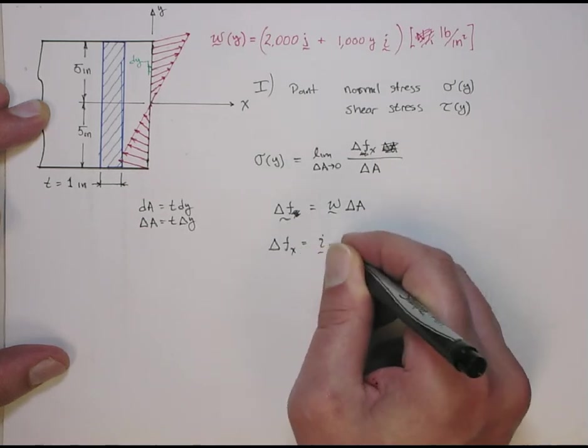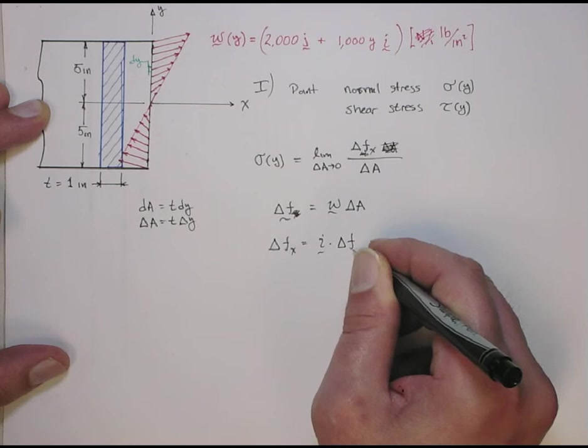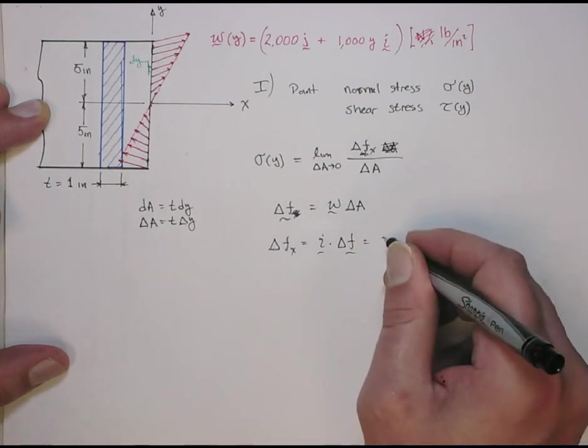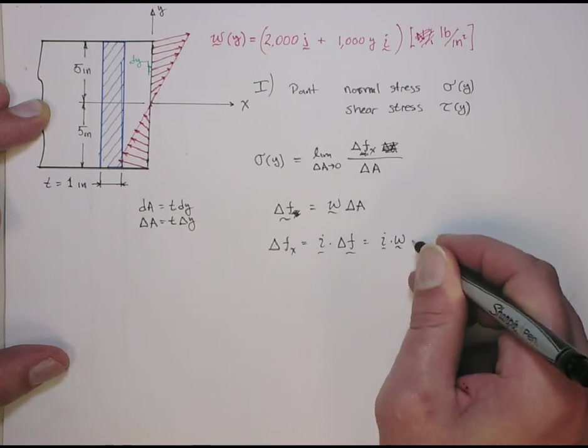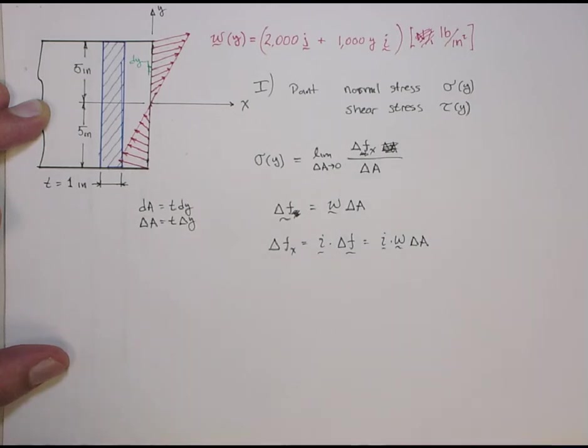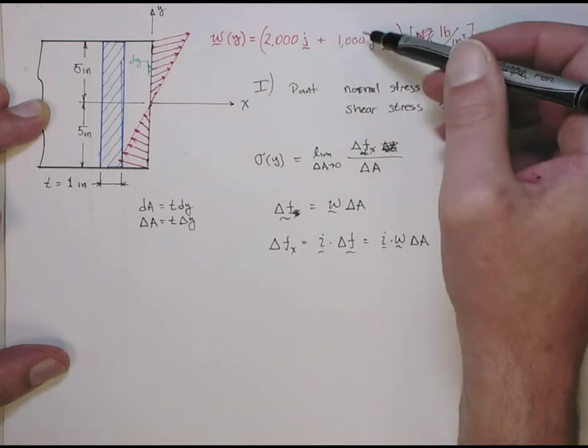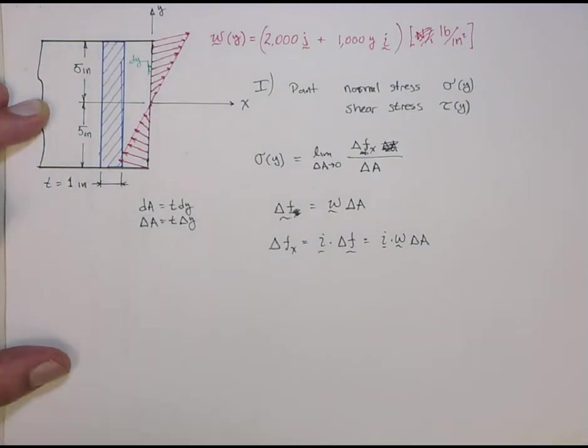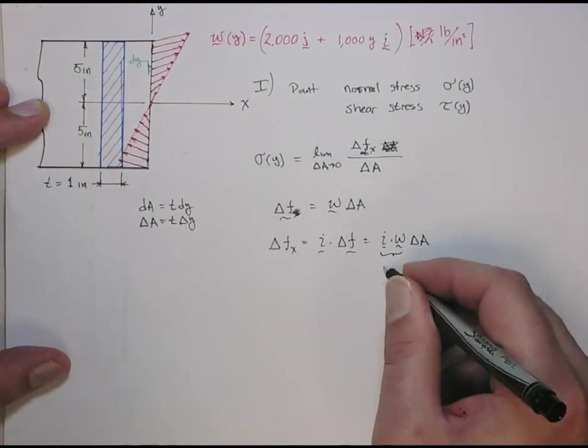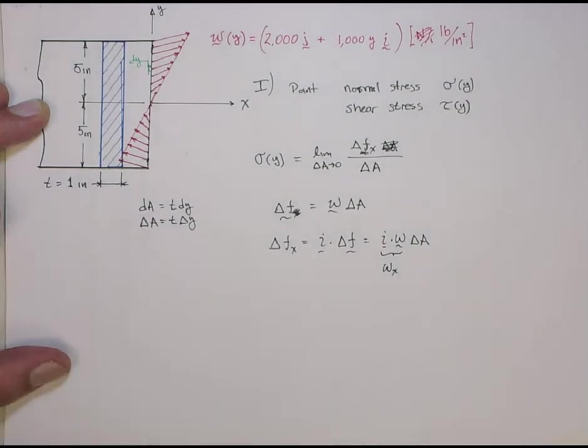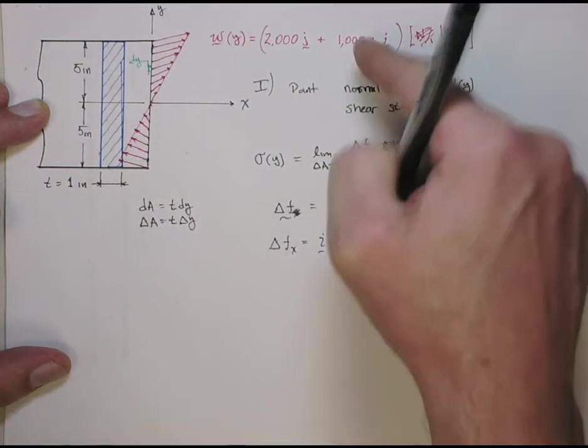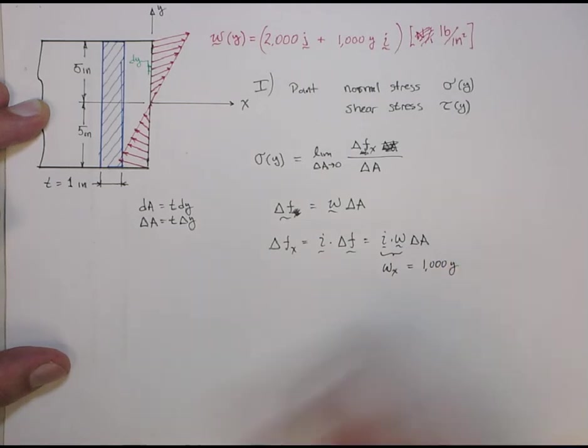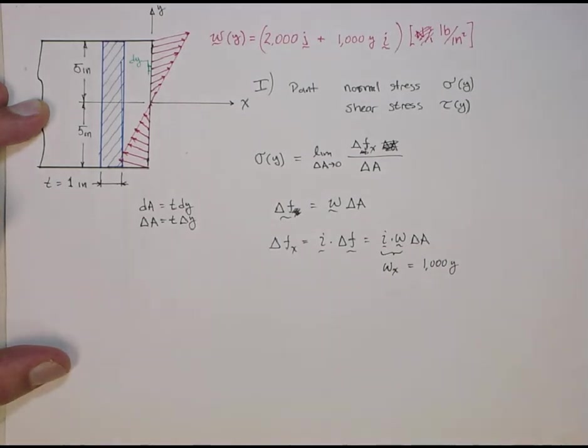So, if I want the component in the x direction, I would take the i unit vector and dot it with this quantity. That picks out the x component, so that gives me i dotted with w delta a. And here, if you look at w, that's just going to pick off this 1,000 times y. For now, we'll call this the x component of w. And in this case, we know from up here, it's 1,000 times y. So, it's a function of position.